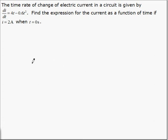The following is an example of an initial value problem. The time rate of change of electrical current in a circuit is given by this equation. Find the expression for the current as a function of time if i equals 2 when t equals 0.